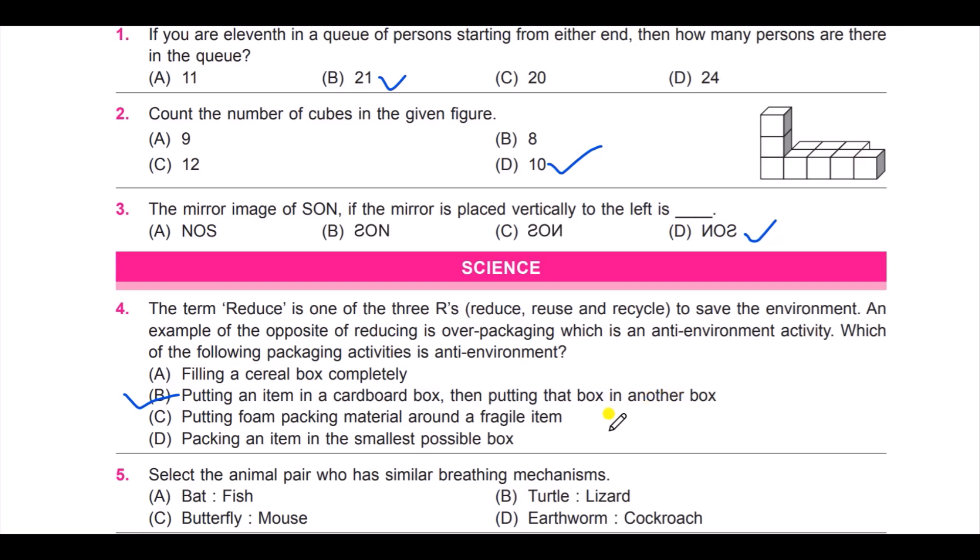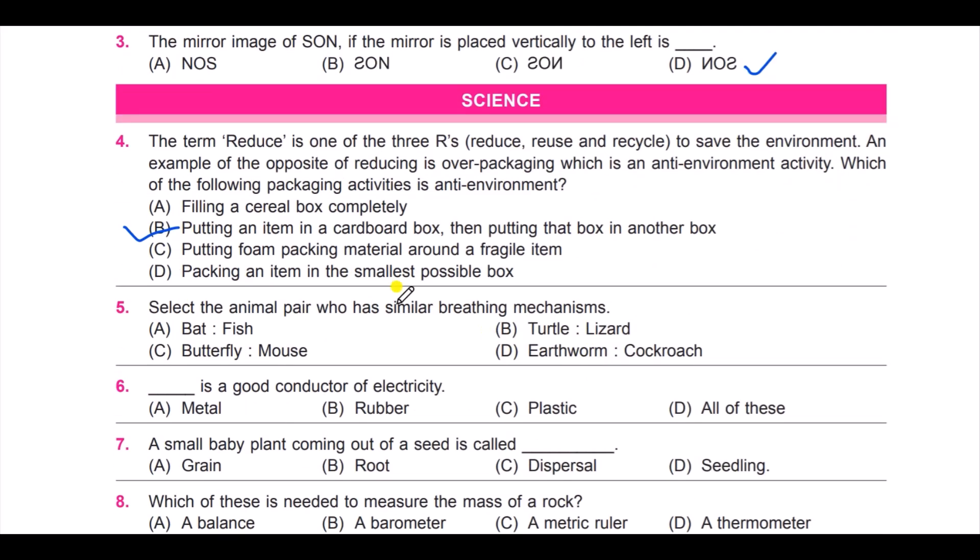Next question: select the animal pair who had similar breathing mechanisms. Option A: bat and fish, B: turtle and lizard, C: butterfly and mouse, and D: earthworm and cockroach. What's the answer? It is B: turtle and lizard. They have similar breathing mechanisms.